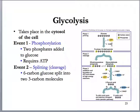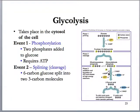What we're starting with is a six-carbon glucose molecule — if you count these black circles, one, two, three, four, five, six — we're starting with a six-carbon glucose. And by the end, we finish with two three-carbon pyruvic acids. Because glucose has six carbons and pyruvic acid only has three, we end up with two pyruvic acid molecules.